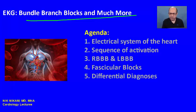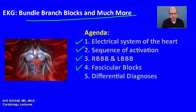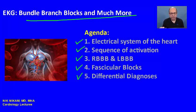During this presentation we are going to look at the electrical system of the heart. We are going to analyze the sequence of activation of the ventricles and how these bundle branch blocks occur. Then we are going to specifically look at right bundle branch block and left bundle branch block. After that we are going to look at fascicular blocks, and finally some differential diagnosis, causes for bundle branch block, and what these bundle branch blocks signify when evaluating a patient at bedside.